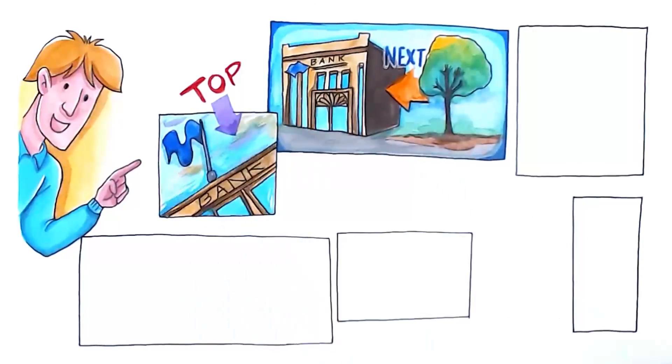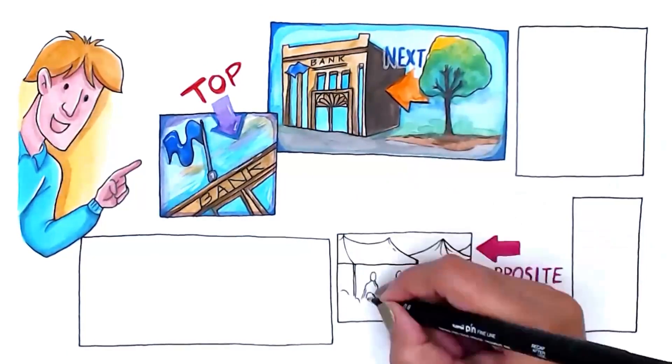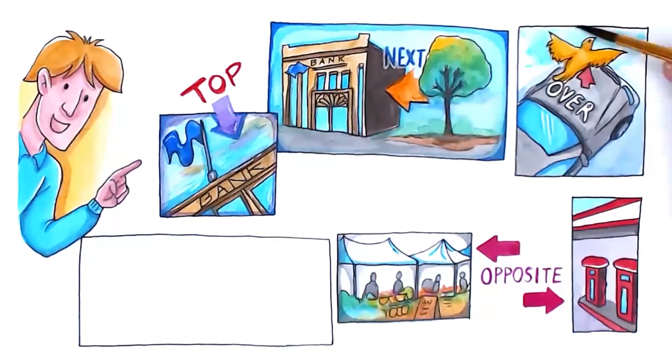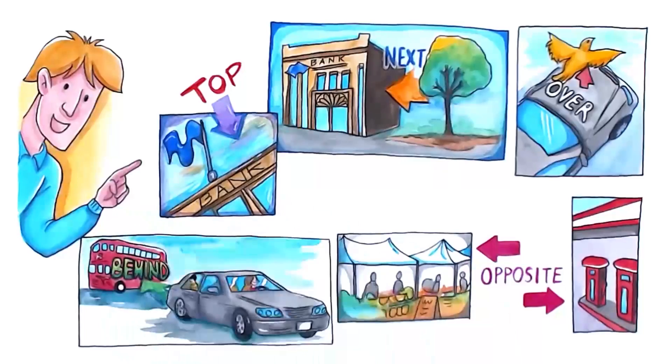On top of in on top of the building, opposite to in opposite to the gas station, above and over in bird flying above us, behind in a big vehicle behind us.